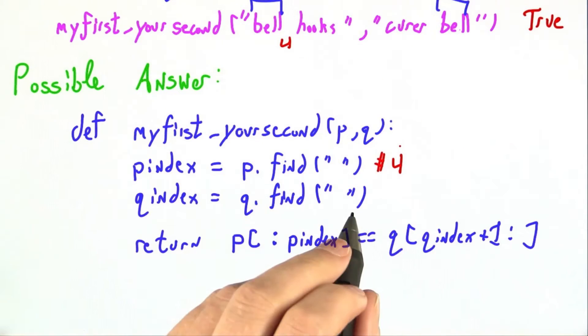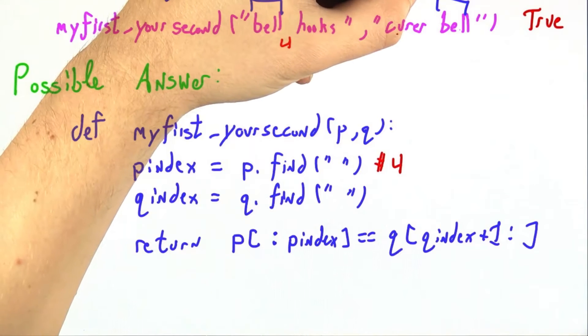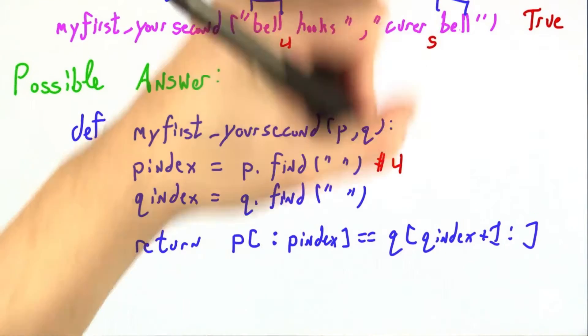q index, the location of this space in q might be different. 0, 1, 2, 3, 4, 5.